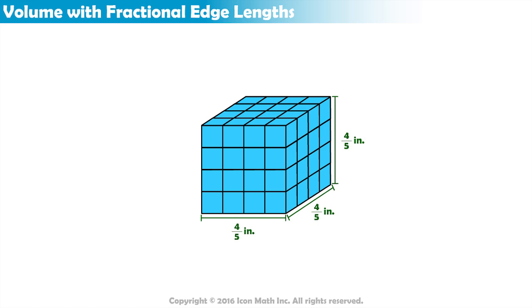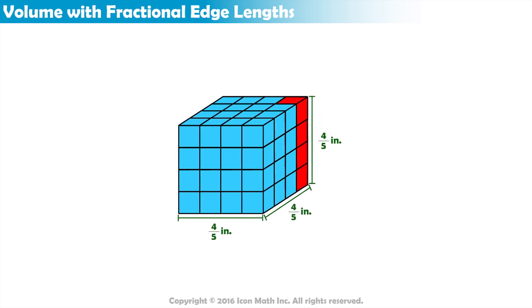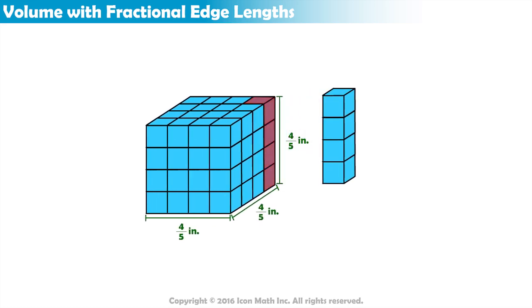Notice that the height is shown with 4 smaller cubes. Each of these cubes is therefore 1/5th of an inch in height. 1/5th plus 1/5th plus 1/5th plus 1/5th equals the total height of 4/5ths of an inch.